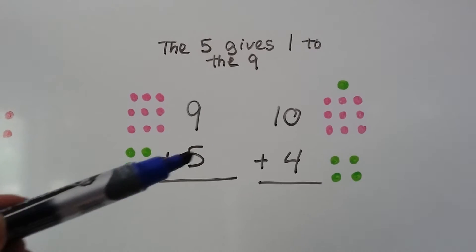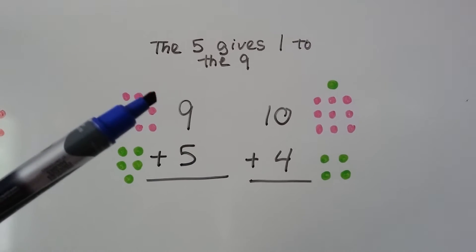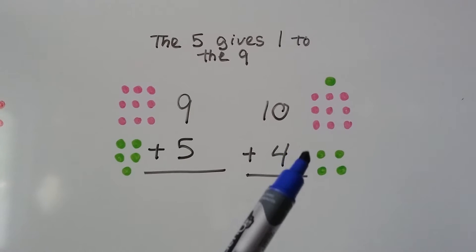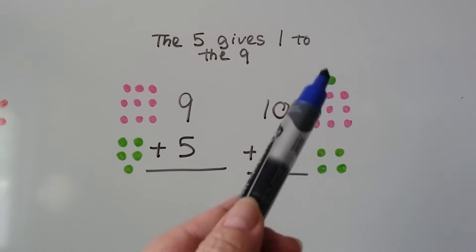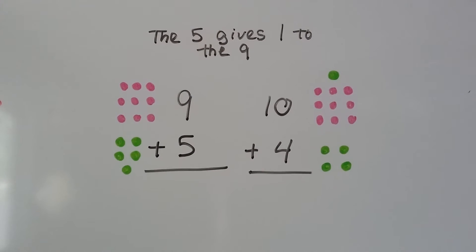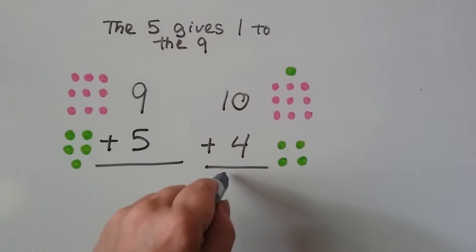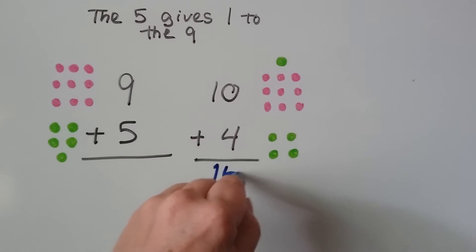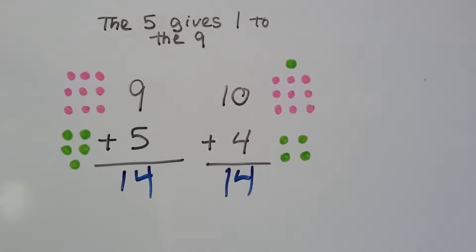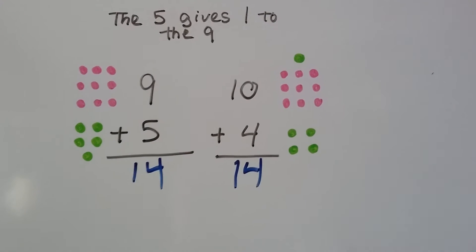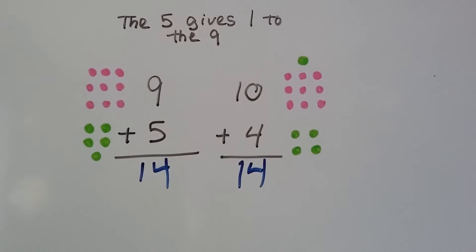Let's try it again. We have 9 plus 5 — this is like what we did in the last video. The 5 is going to give 1 counter to the 9; that's going to make the 5 a 4 and the 9 is going to become a 10. 10 plus 4 is 14, so 9 plus 5 must be 14. This went down by 1, this went up by 1.